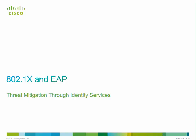Welcome to module number one, lesson number two of SISAS. In this lesson we're going to talk about 802.1X and the extensible authentication protocol. 802.1X is not EAP, and EAP is not 802.1X. Oftentimes these two components get integrated together or we look at them together, but they're actually uniquely different protocols and uniquely different processes. They just happen to work together a lot to provide authentication.